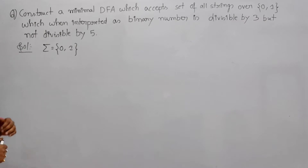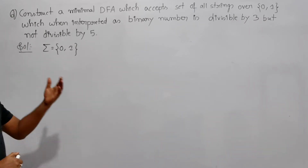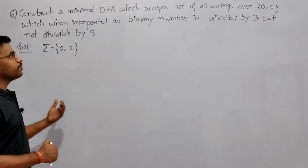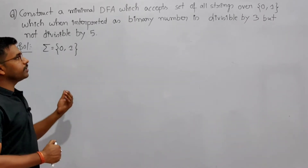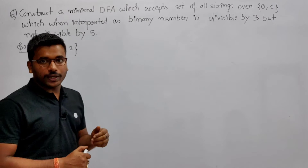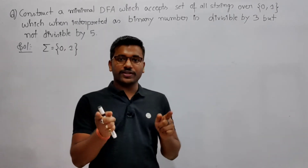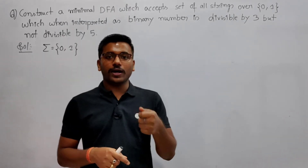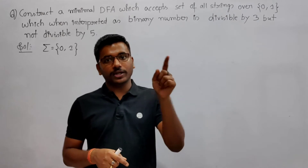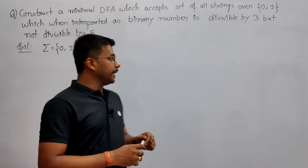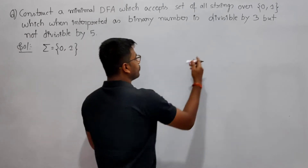Now see the question. It is saying: construct a minimal DFA which accepts strings over {0,1} which, when interpreted as a binary number, is divisible by 3 but not divisible by 5. In the previous lecture it was saying divisible by both 3 and 5; now it should be divisible by 3 but not divisible by 5.